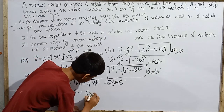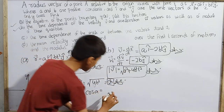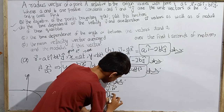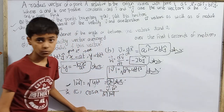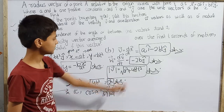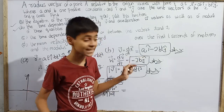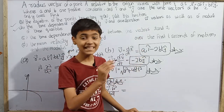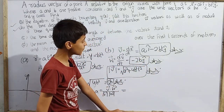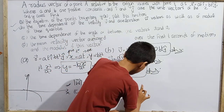Taking cos alpha as the dot product of v and w divided by their magnitudes: vector v dot vector w. Since vector w equals minus 2b·ĵ has no î component, only the ĵ components contribute. The dot product gives minus 2b·t·ĵ dotted with minus 2b·ĵ equals 4b²t.